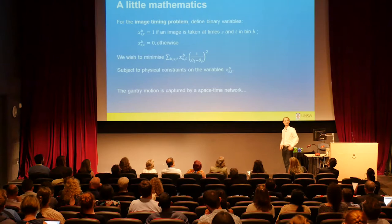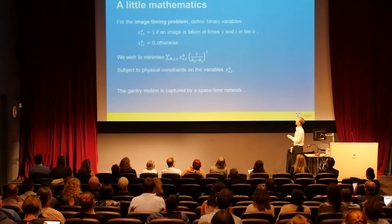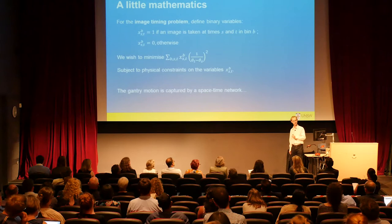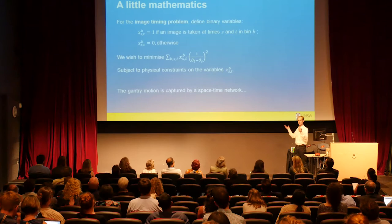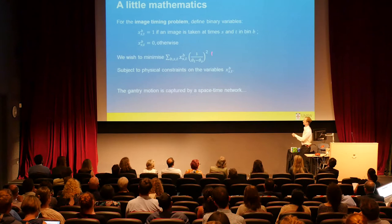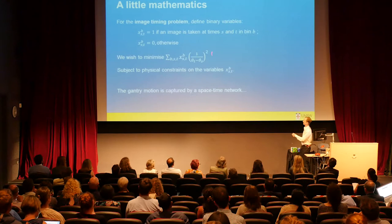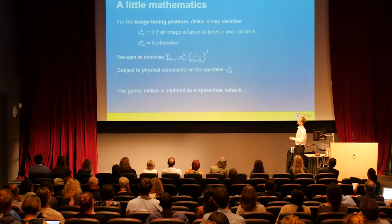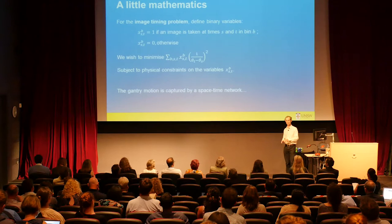We have a 3D array of binary variables: if you take an image at time s and angle t in bin b, you set this variable to one; otherwise zero. Once we decide all these variable values, that tells us everything about timing. We minimize an expression where, if we make an image at time s and angle t in bin b, we penalize according to one over the square of the angle difference. If angles are very close at times s and t, that's redundant information and we penalize it more heavily; larger angle separations incur less penalty. We minimize this subject to physical constraints, and the gantry motion is controlled by a space-time network.